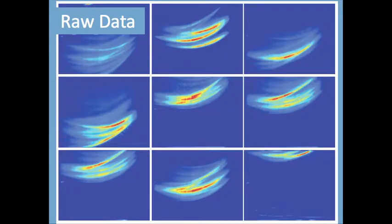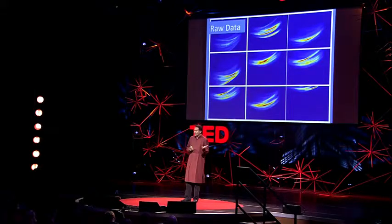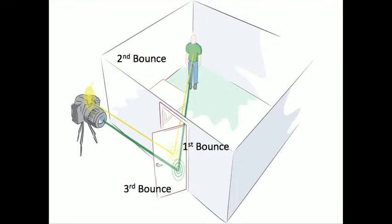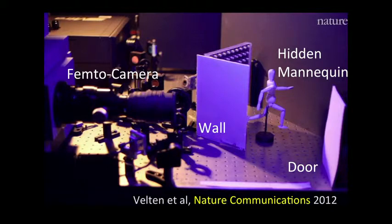We can take all that raw data and treat it in very interesting ways. Superman can fly. Some other heroes can become invisible. But what about a new power for a future superhero — to see around corners? The idea is that we're going to shine some light on the door. It's going to bounce, go inside the room, some of it will reflect back on the door and then back to the camera. We're going to exploit these multiple bounces of light. And it's not science fiction — we have actually built it.